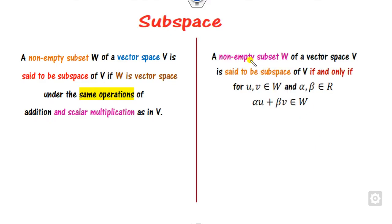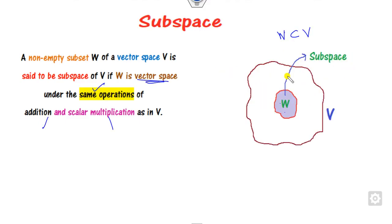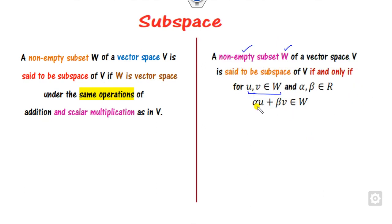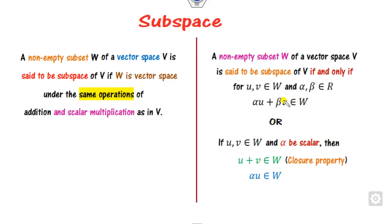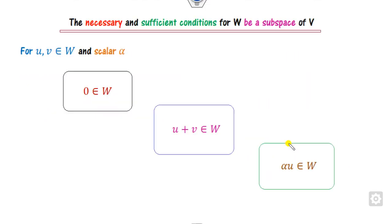In other words, any non-empty subset W is said to be a subspace if, for any two elements taken from W and scalar values alpha and beta, the linear combination alpha*u + beta*v again lies in W. Equivalently, if you take any two elements u and v and prove that their sum and scalar multiple belong to the same set, then it is a subspace.